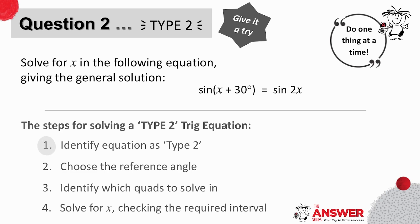First, to identify the type of equation, in this case as type 2. Next is then to choose the reference angle. Thirdly, to identify which quads to solve in. And finally, simplify and solve, checking the required interval for x. Pause here now to give yourself time to try it.